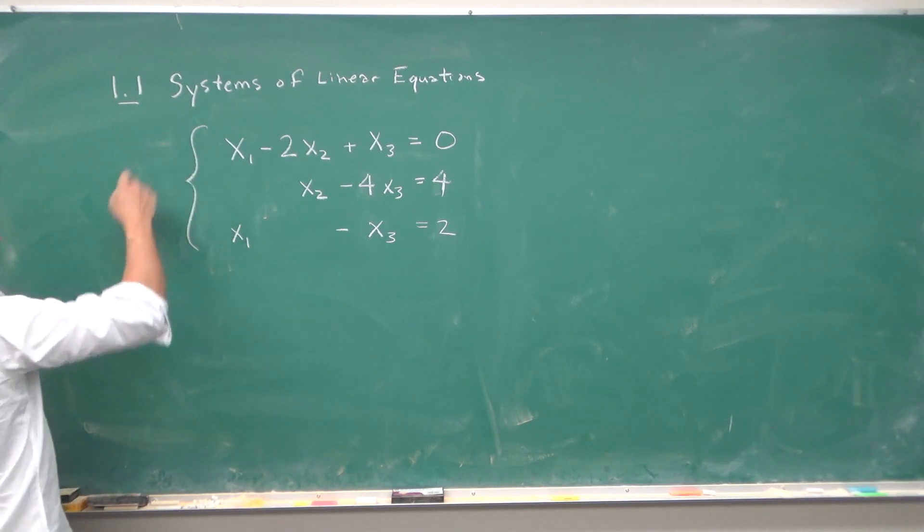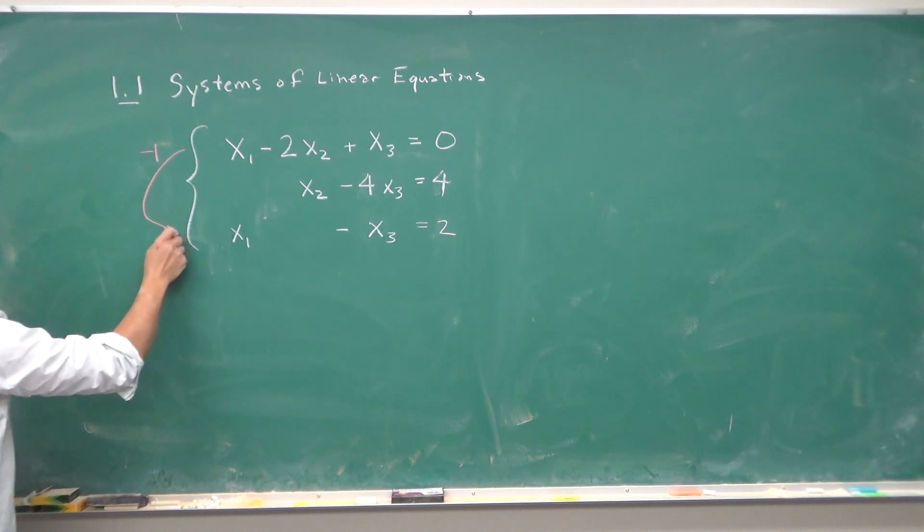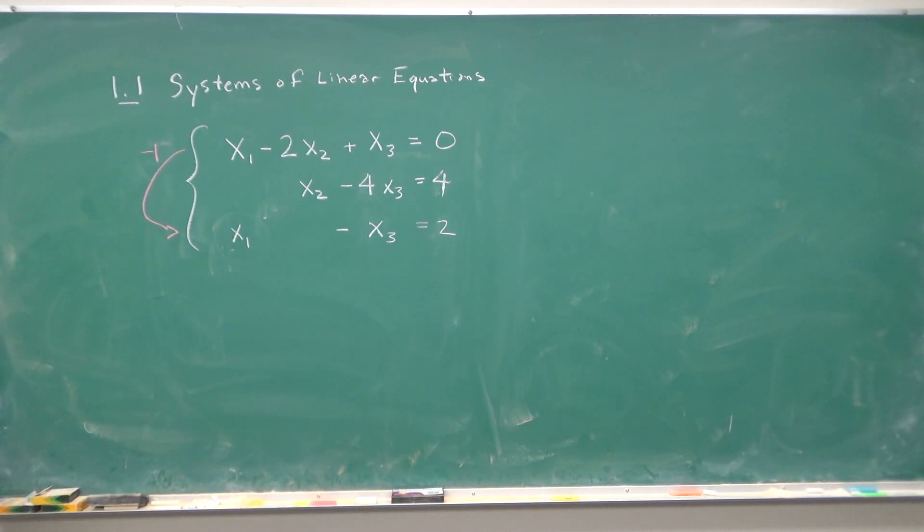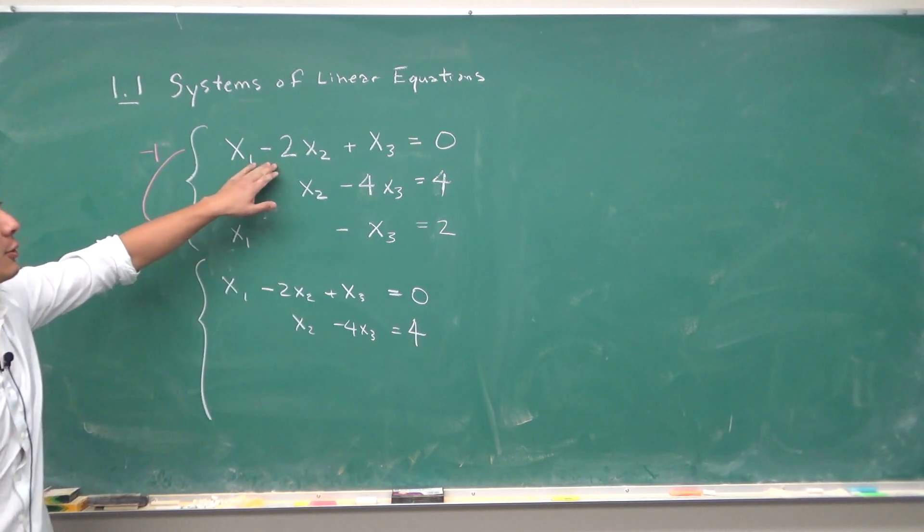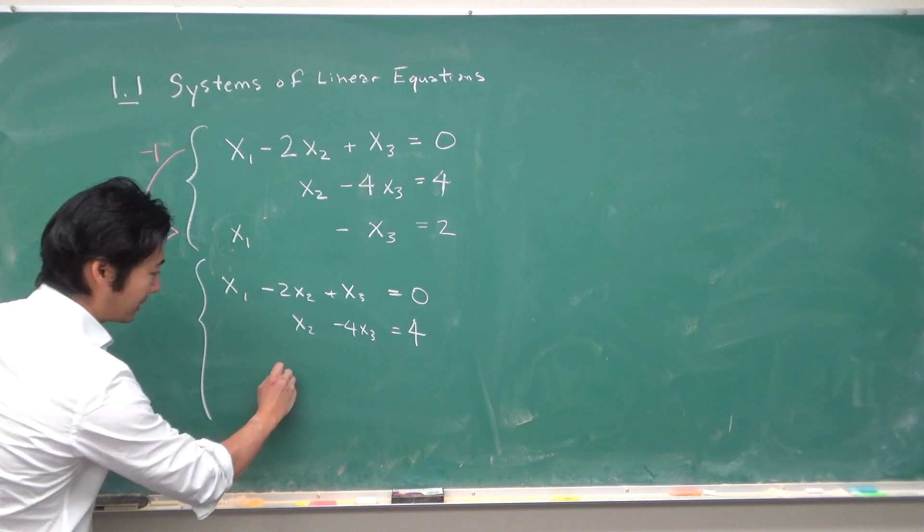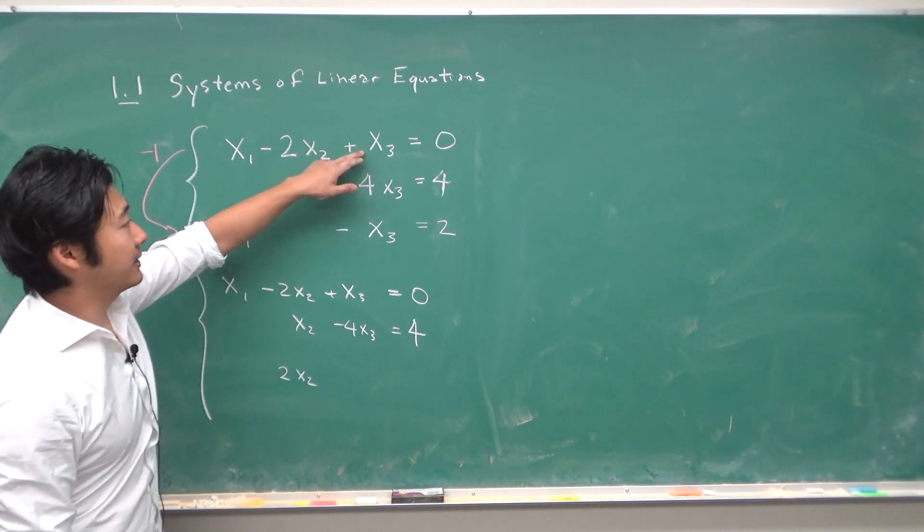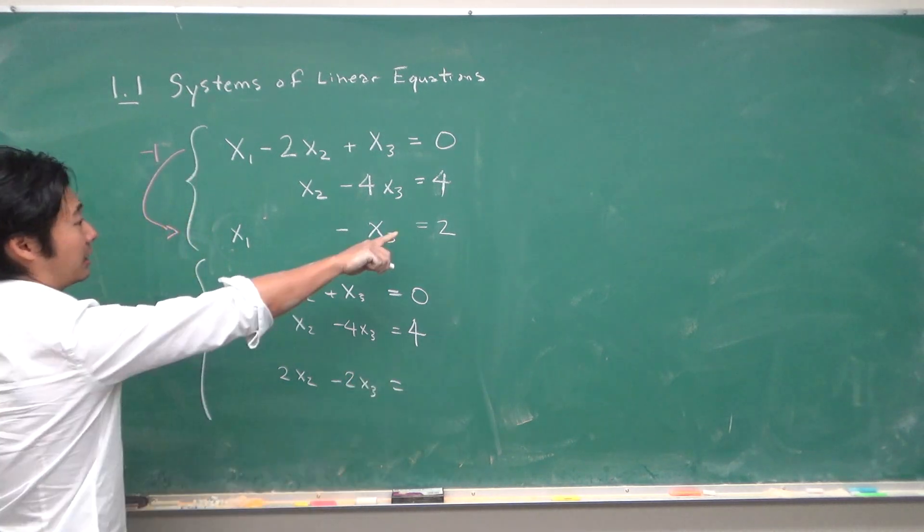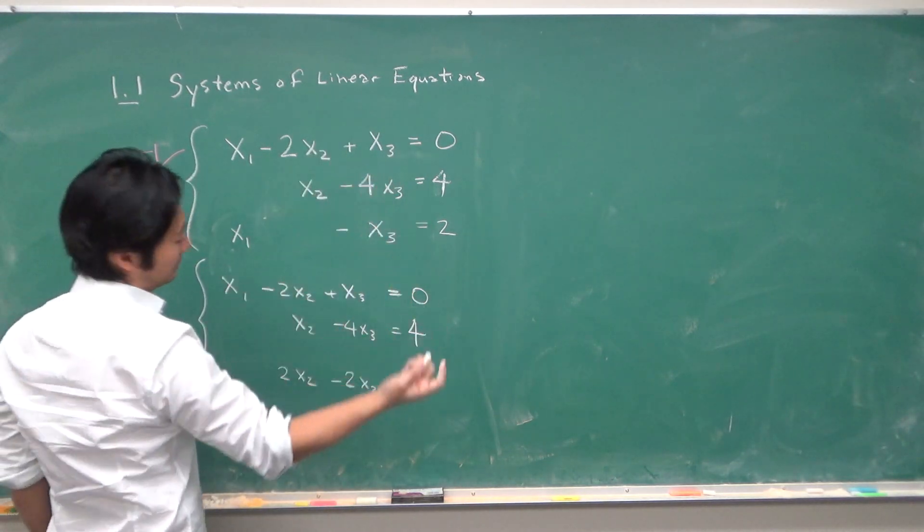Now we can multiply this equation by negative 1 and add it in to this equation to get rid of this variable. So when we do that we get x1 minus x1 is 0. Here we'll have 2x2 plus 0 so 2x2. Here we will have negative x3 minus x3. So that's minus 2x3 equals nothing happens here. 0 times negative 1 is still 0.